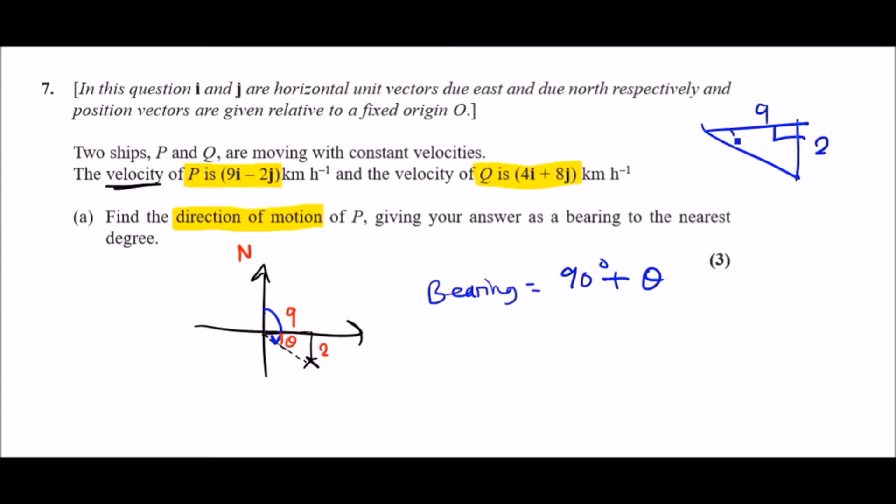We just need to recall our SOHCAHTOA. The length opposite the angle is known as the opposite, and the length next to it is always known as the adjacent. The long side is always the hypotenuse, but we don't really need that because it's irrelevant.